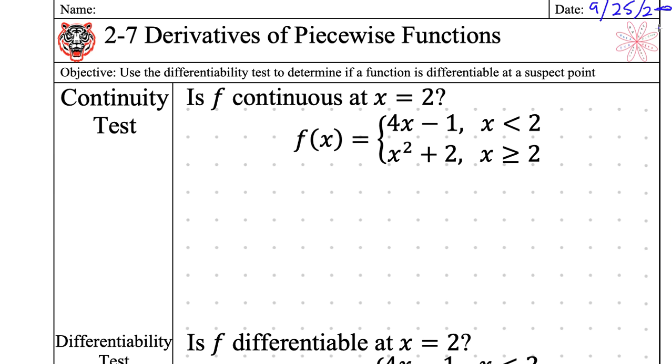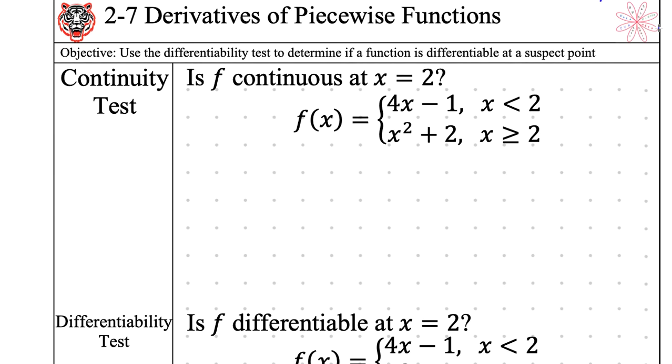Let's go ahead and review that. My question for you is this function f right here, which is defined by this piecewise function, is that continuous at the suspect point 2? They should all match up. What do you do? Remind me. How do I work with continuity tests?